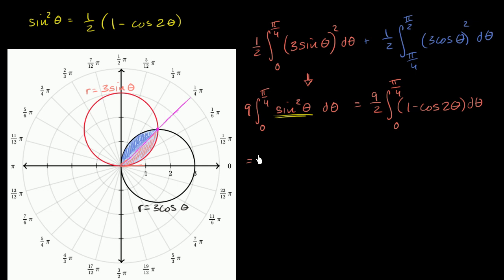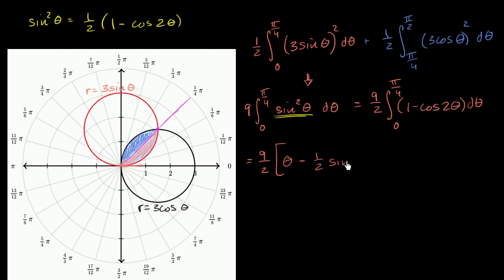So this is going to equal nine halves. The antiderivative of one is theta, and the antiderivative of cosine two theta is negative one half sine of two theta. You could do u-substitution, but you might be able to do this in your head. You can verify: the derivative of sine of two theta is two cosine of two theta, and multiplying by negative one half gives negative one, as needed.